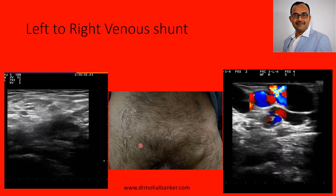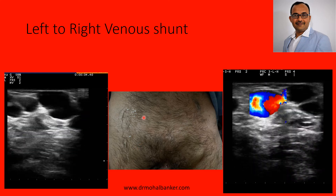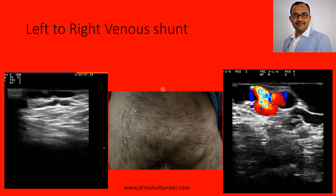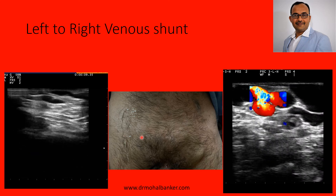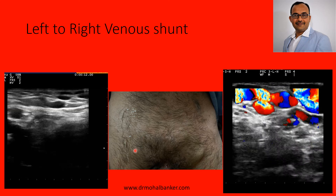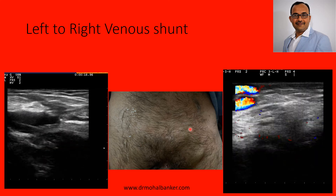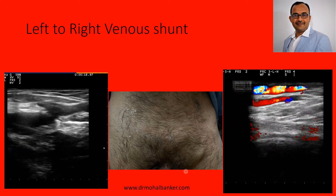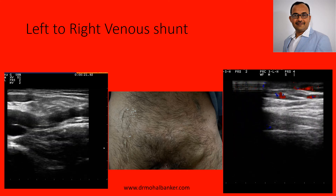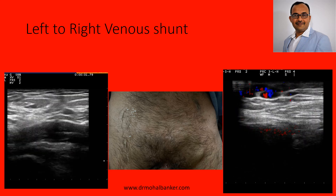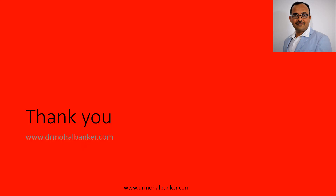This entire venous drainage of the left lower limb goes from the left side to the right side through all these collaterals. From the right iliac vein, it goes towards the IVC. So the right iliac vein carries venous drainage of the right lower limb as well as from the left lower limb. Because of that, these dilated channels are visible in the lower abdomen of the patient. Thank you so much for listening to this interesting case — if you have any queries, just ask me and I will try to solve all of them.